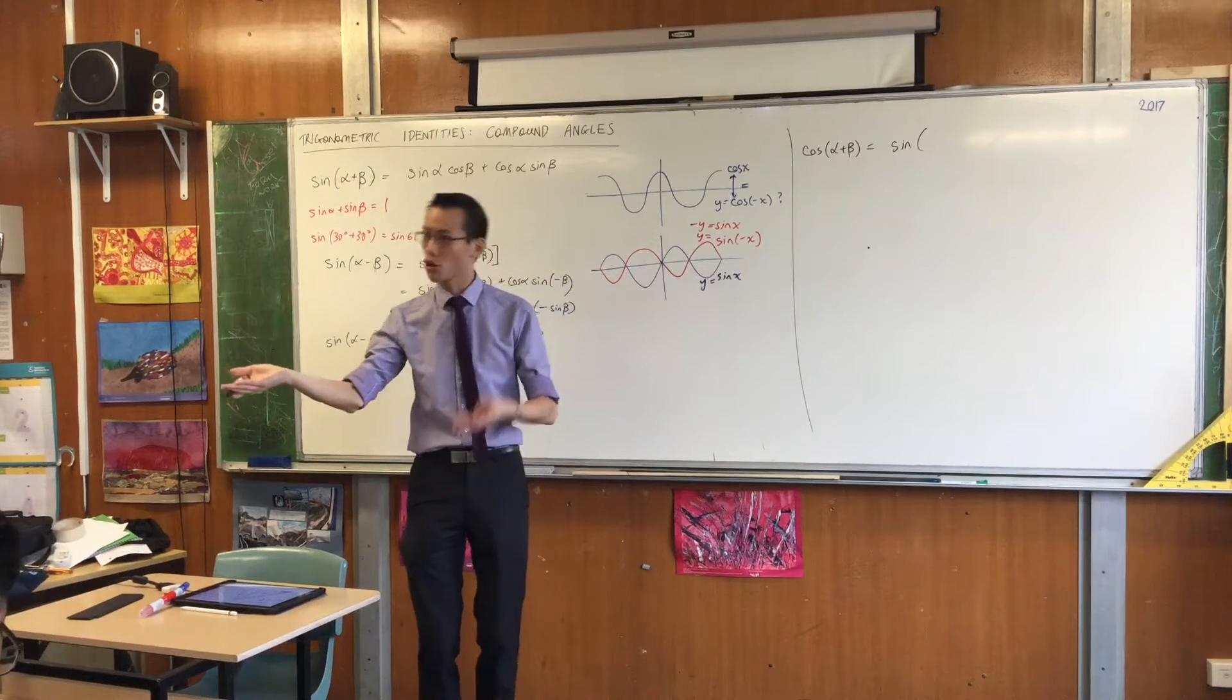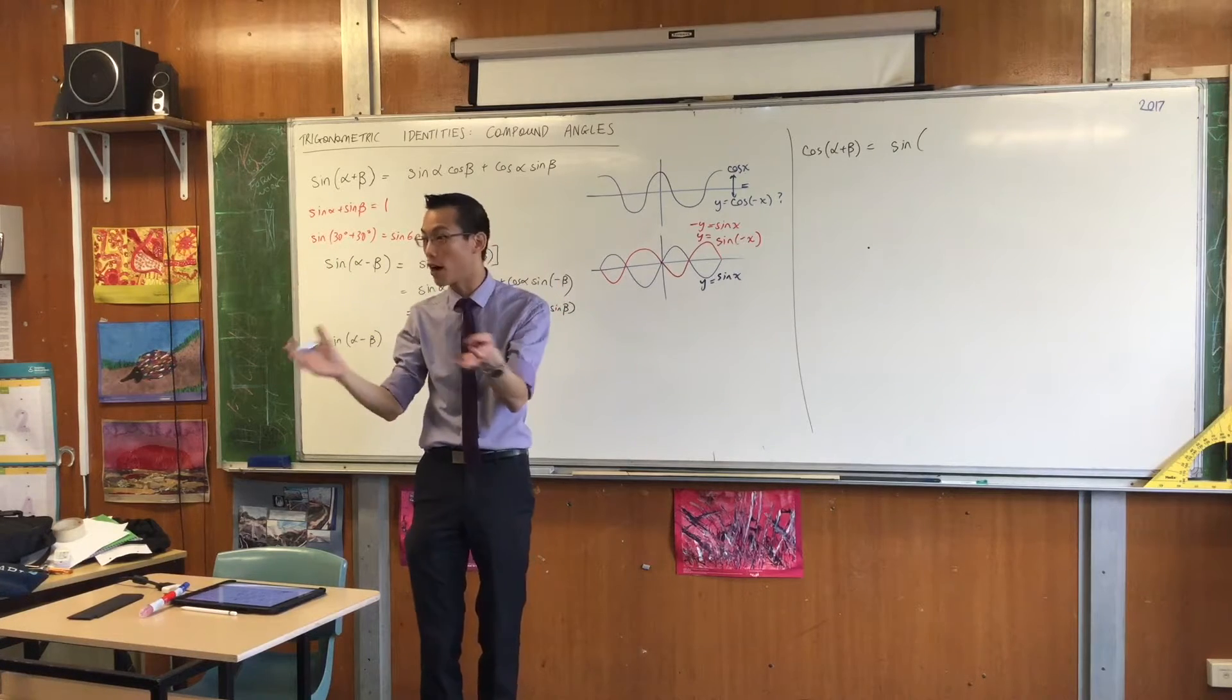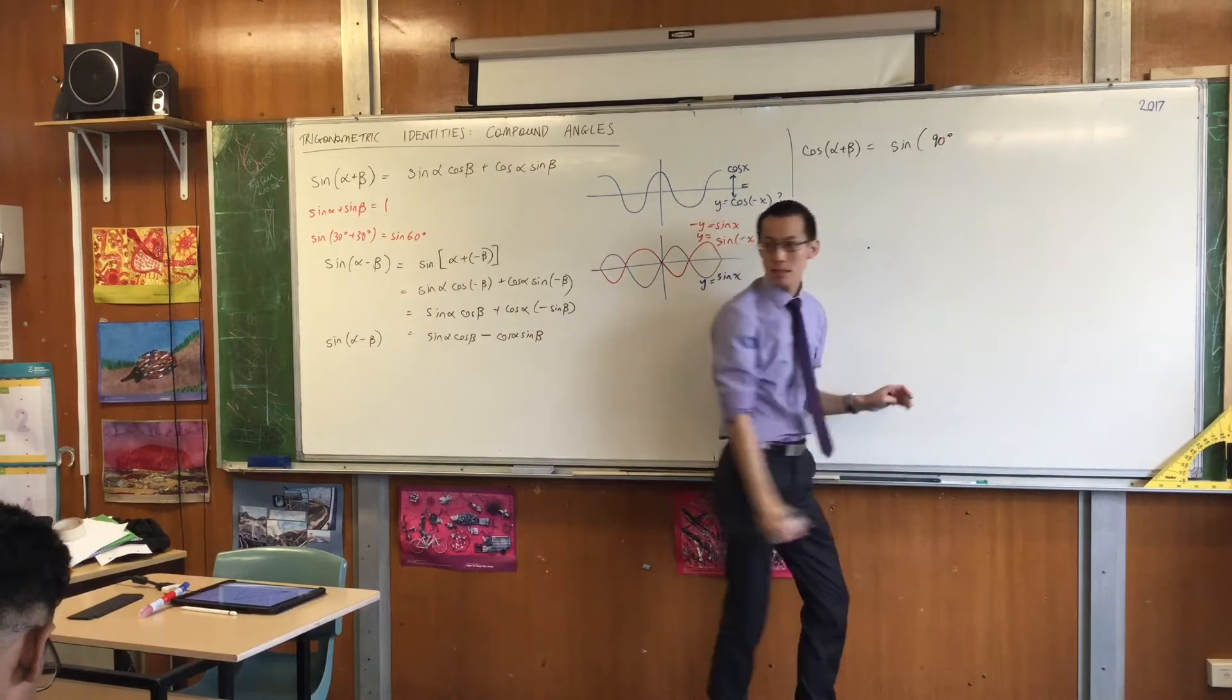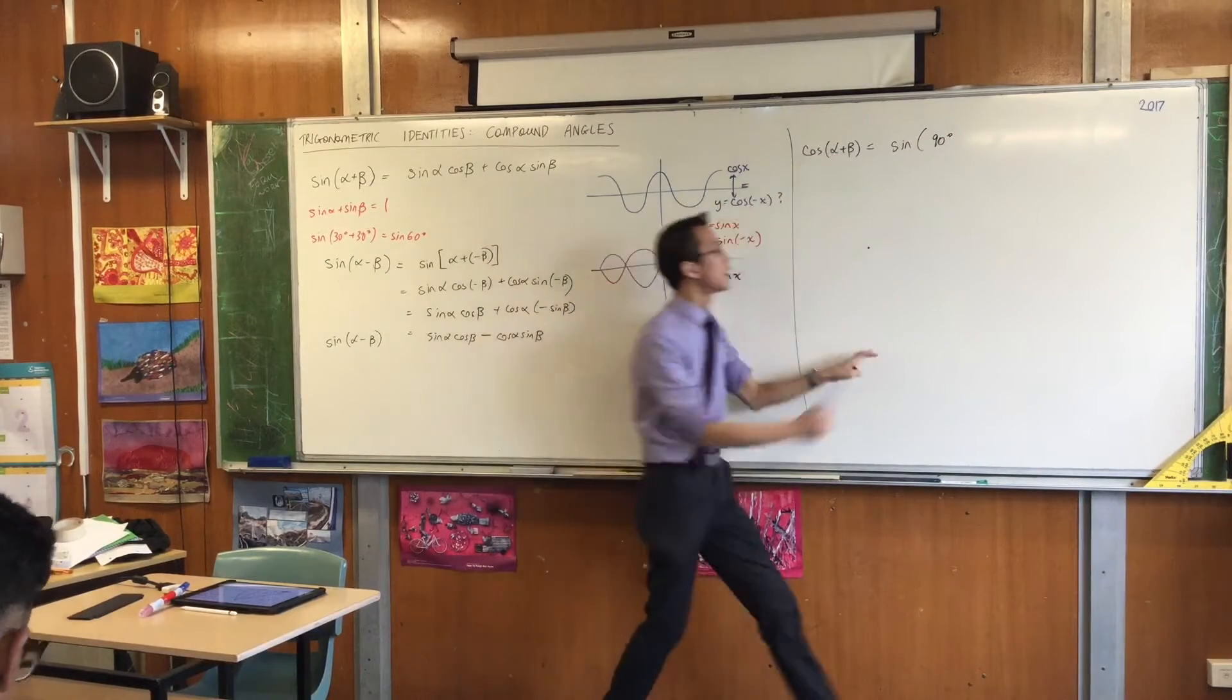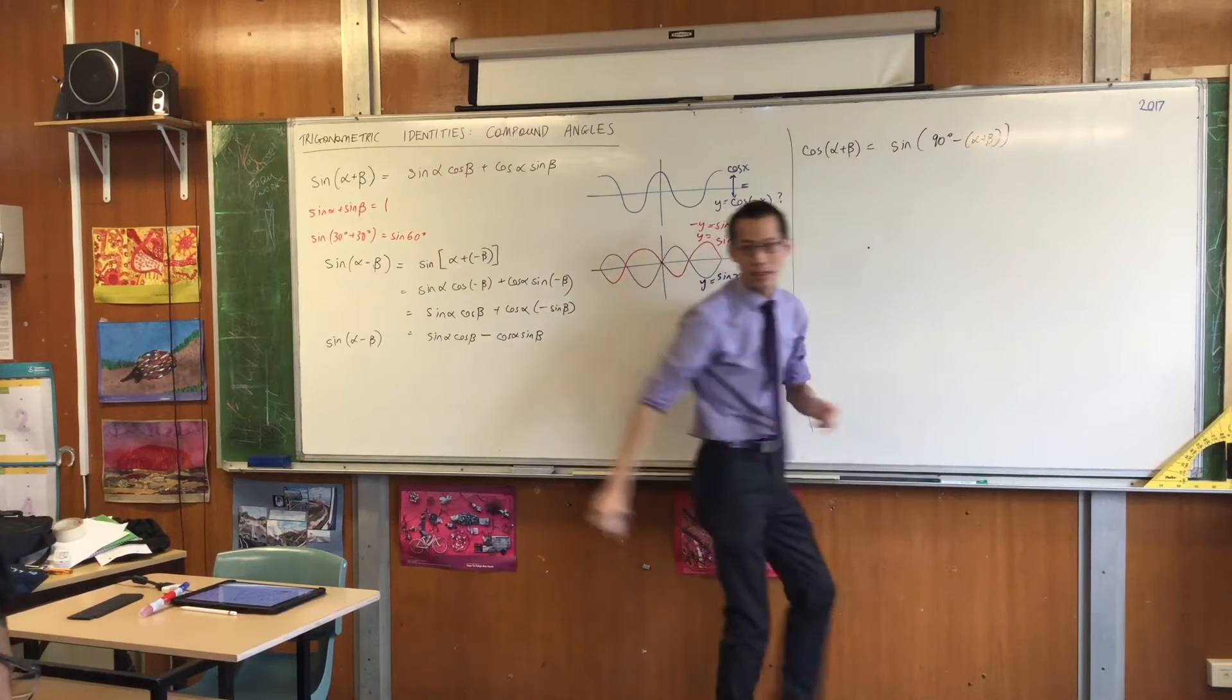So sine 30, cos 60, sine 21, cos 69, whatever adds up to 90. So I'm going to write that over here, 90 degrees minus this angle over here, like so.